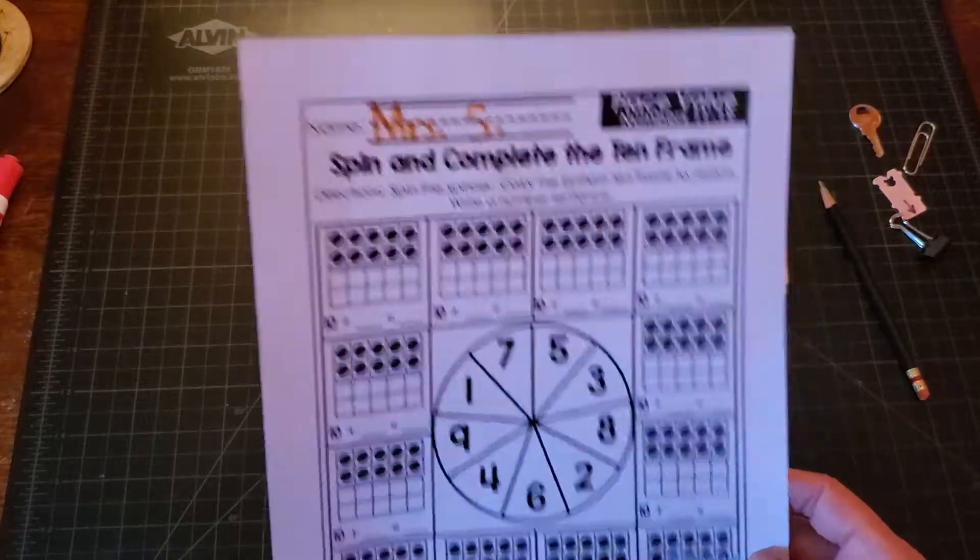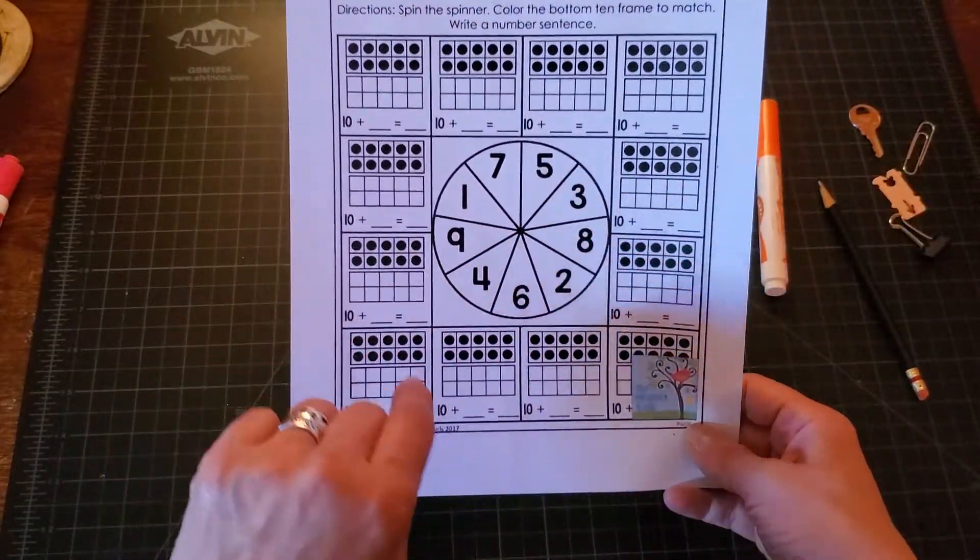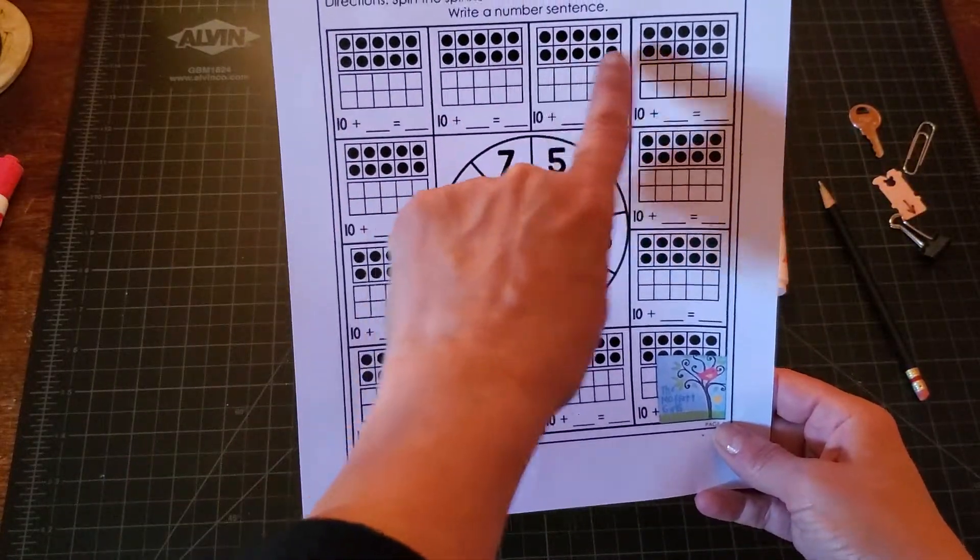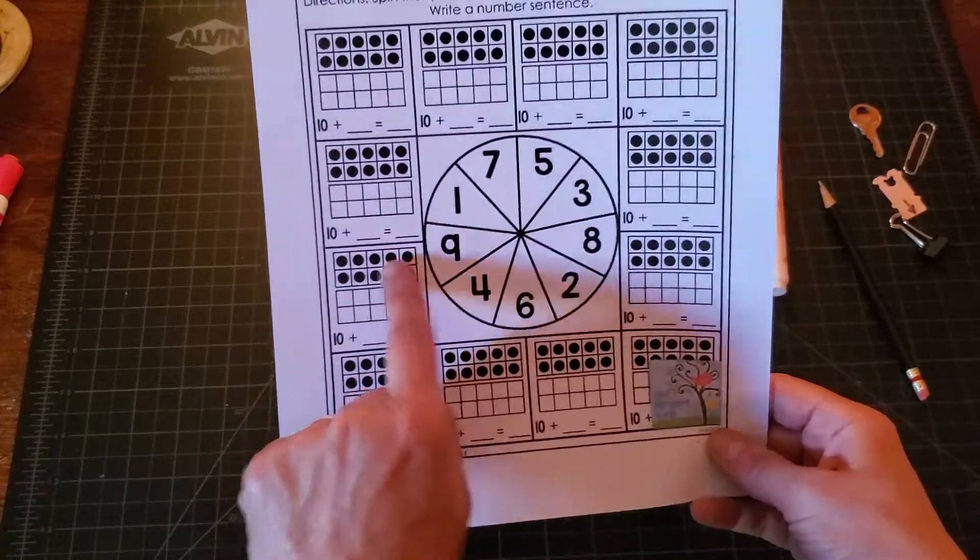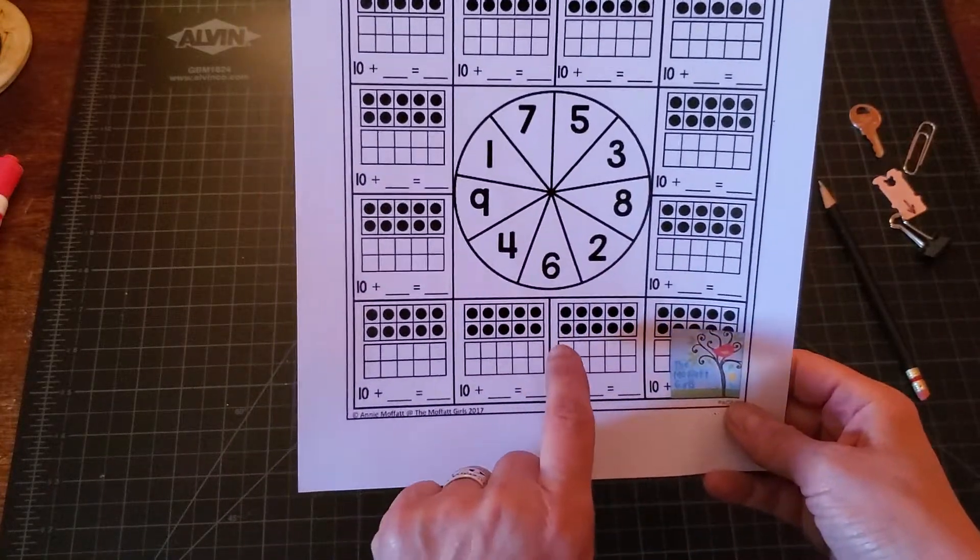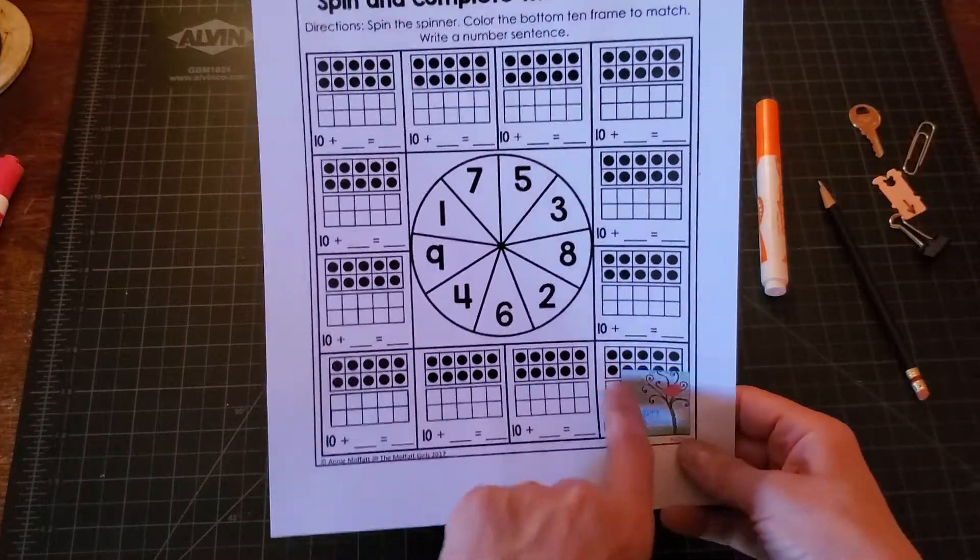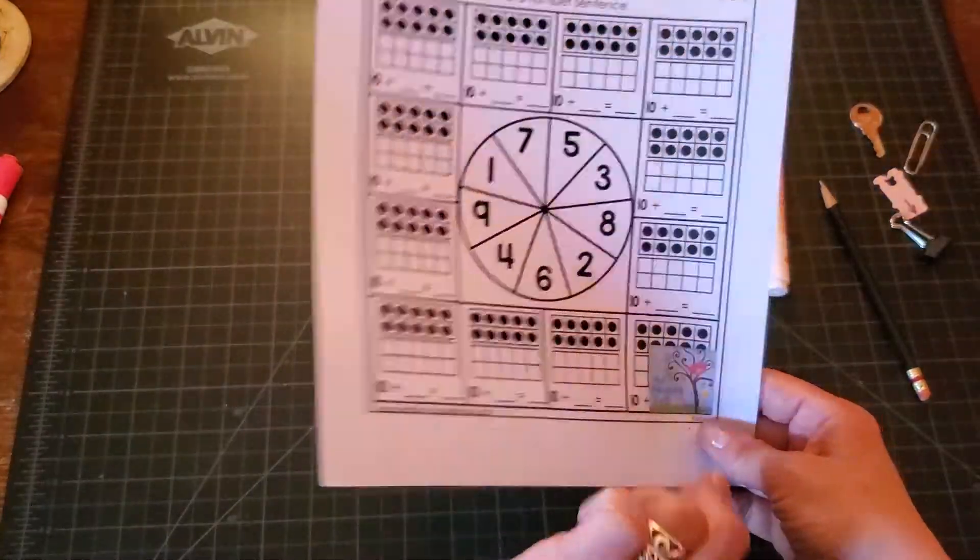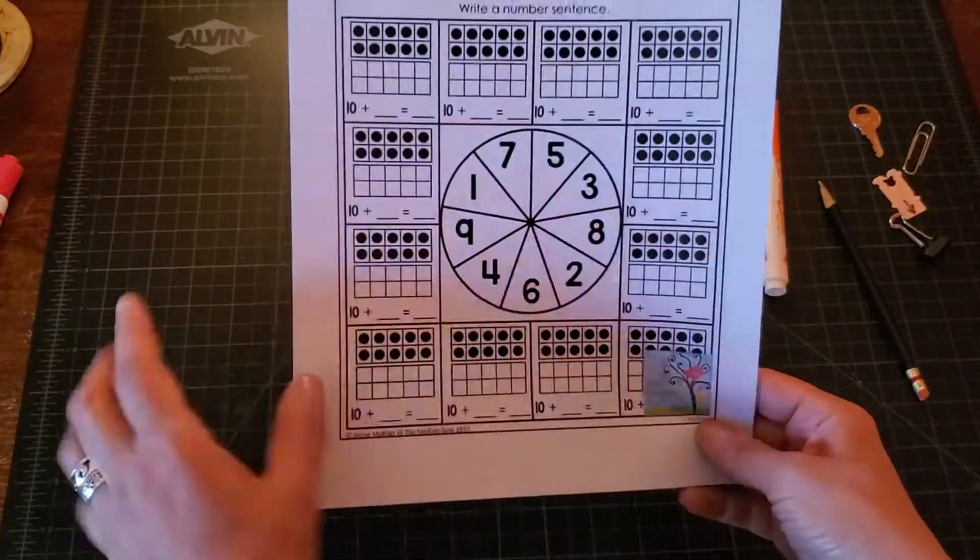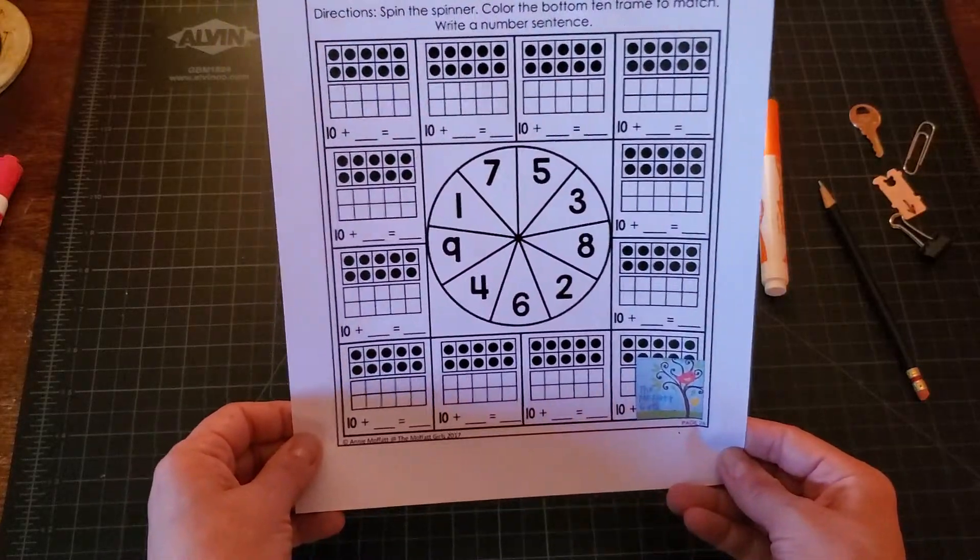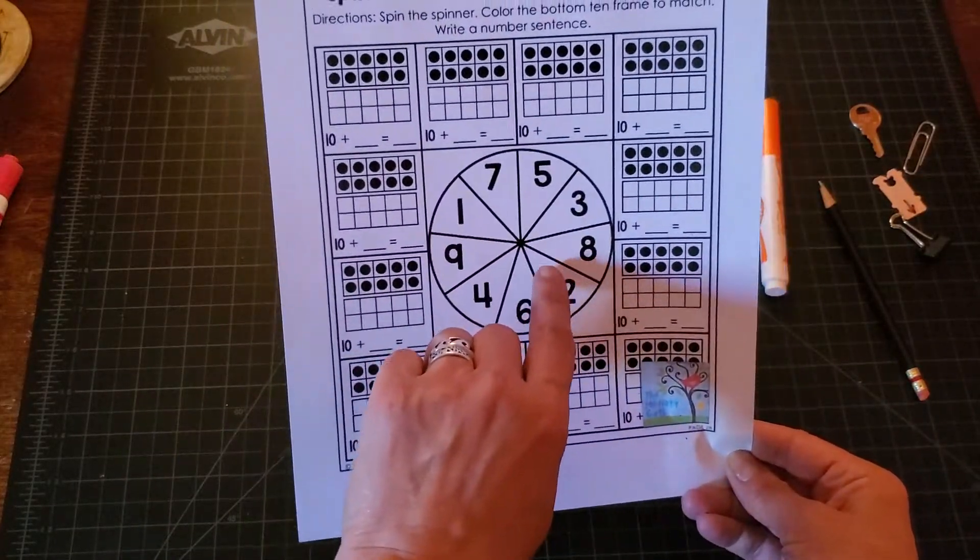There's a spot for your name and then there are eleven squares. One that's covered with the logo of the people who made it, so we're not going to be using that one. And plus the spinner in the middle.